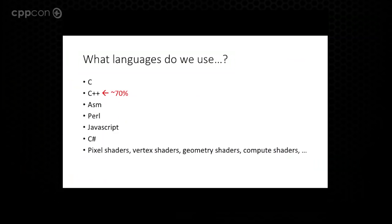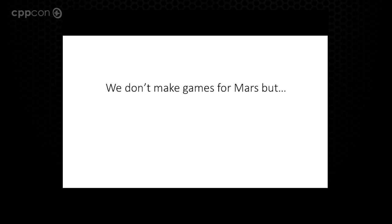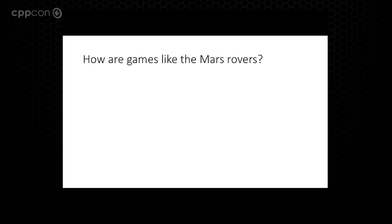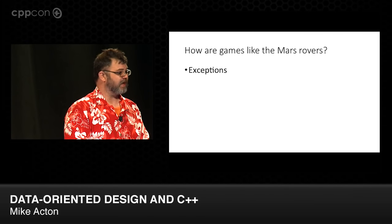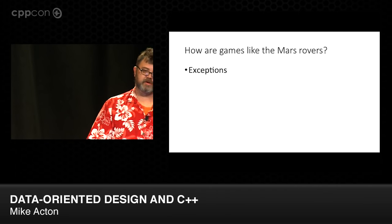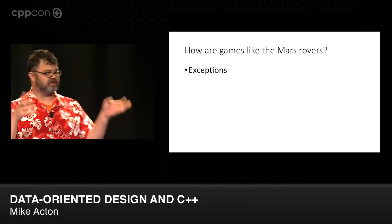There's also random other things: pixel shaders, vertex shaders, GPU stuff, geometry shaders, compute shaders — there's a lot more work going on in this space now. And to connect with our keynote yesterday, we definitely don't make games that go to Mars. But there are a lot of similarities between what we do and what JPL did in their embedded system for the rover. So how are games like the Mars rovers? Exceptions: in a similar way, we avoid them. We turn them off if we can at all help it. Occasionally there's a third-party library we have to interact with that's designed around them, so we'll sandbox it off.